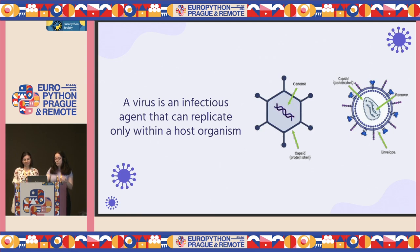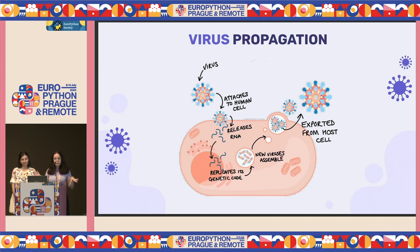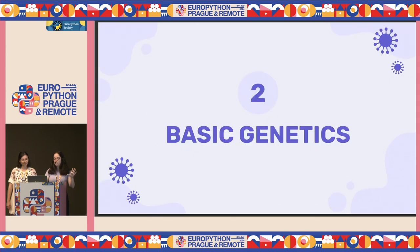The part we are interested in is the replication of viruses. Viruses need a host organism for reproduction, and here you can see the scheme. It consists of the virus attaching to a human cell, or any cell, in which it releases the genetic content. This genetic content is replicated using the host cell's mechanisms and resources. Then the new viruses with that replicated genetic content assemble, and they are ready to be exported from the host cell to infect other organisms or cells.